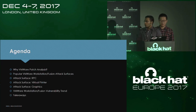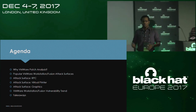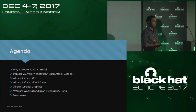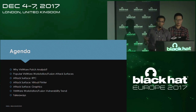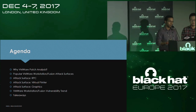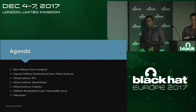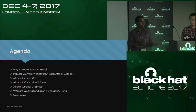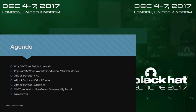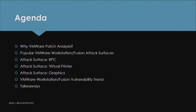This is the agenda of our talk today. We'll quickly start with why we started this research and the motivation behind doing VMware patch analysis for the past one year. After that, we'll jump into the most popular attack surfaces targeted by vulnerability researchers to perform guest-to-host escapes. We'll cover three attack surfaces: RPC, the virtual printer, and the graphics components of VMware. We'll finish with vulnerability trend analysis.